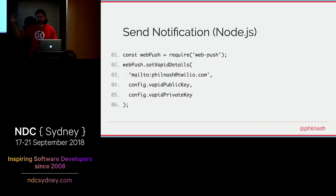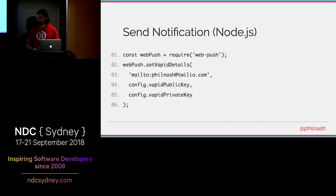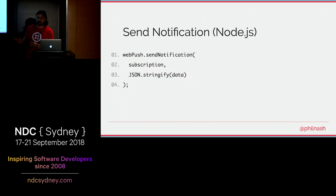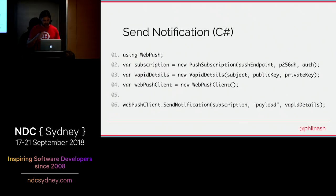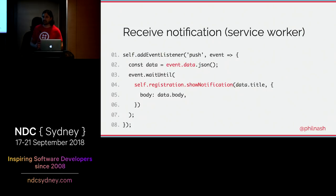On the server, using the Web Push library in Node, you set up your VAPID details — public and private key plus a subject, which can either be a URL to a contact page or a mailto address showing who to contact in case of abuse. Then with `webpush.sendNotification()`, you just take the subscription object and add the data you want to send. I like to put it into JSON so I can destructure it later. The C# web push library looks very similar — you set VAPID details alongside a payload each time.